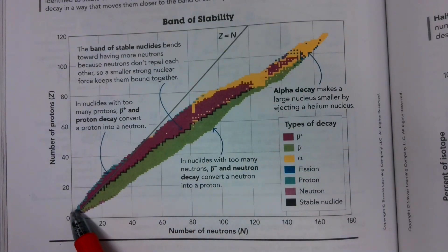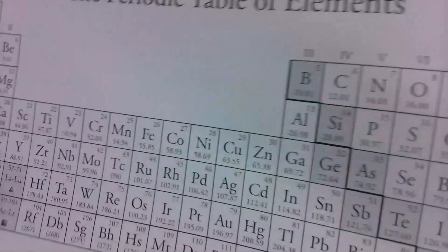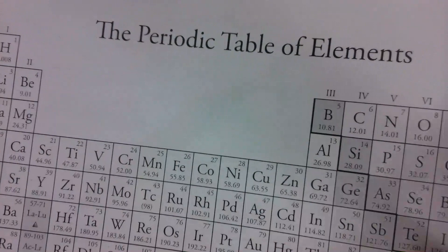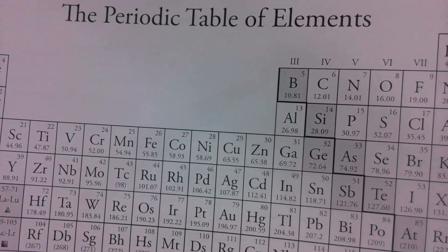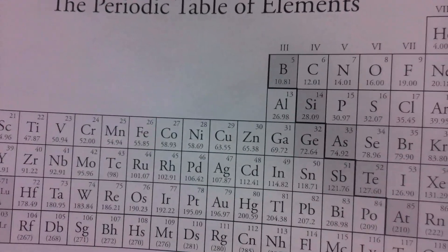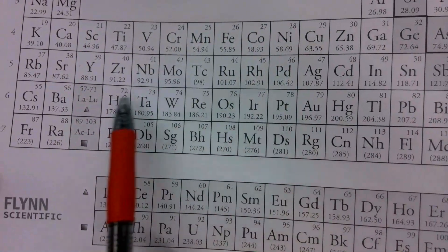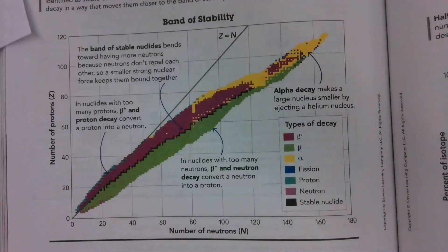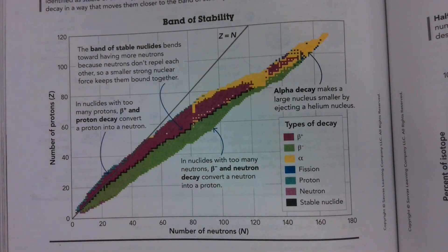If you look down here, atoms near the top of the periodic table are very stable — their nuclei are not going to be falling apart. While down here, the atoms are getting larger and they're becoming more unstable, so they tend to fall apart more easily.